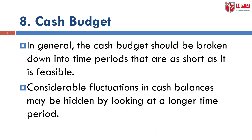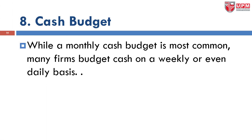In general, the cash budget should be broken down into time periods that are as short as feasible. For example, when I worked in a company before, we had a monthly cash flow — we needed to know how much money comes in and how much goes out. Considerable fluctuations in cash balances may be hidden by looking at a longer time period. While a monthly cash budget is most common, many firms budget cash on a weekly or even daily basis, depending on the financial style of the company.